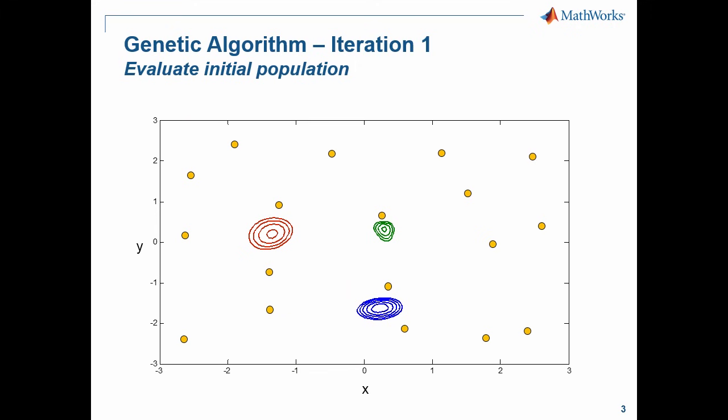Let's see an example of how this might work on an optimization problem of two variables, X and Y. The three sets of contours that we have here are each different minima to the optimization problem. The green minima and the red minima are local minima, while the blue one actually happens to be a global minima. The yellow dots on here are the initial points, or the first generation for my genetic algorithm.